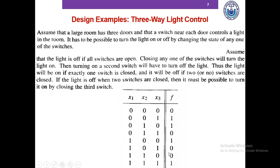With three variables we have 2³ = 8 rows in the truth table, from 0,0,0 to 1,1,1. Each variable equal to 0 means the switch is open, and equal to 1 means the switch is closed. F represents the status of the light: f=0 means off, f=1 means on. When all three switches are open, the light should be off.